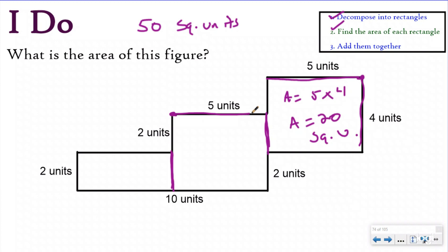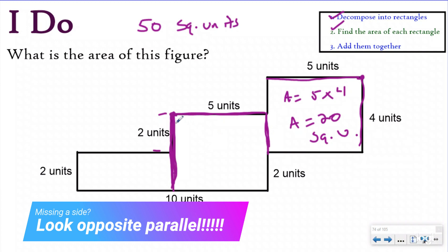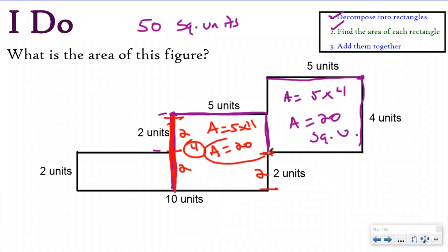For the second rectangle, one dimension is five, but we don't have the second dimension shown. We can't just say it's two — two only goes from this point to this point; we need the entire width. Here's a key idea: if you're missing a side, look opposite and parallel. Because opposite sides of rectangles are congruent, looking opposite parallel tells us this side is also two, giving a total length of four. So area equals five times four, which is again 20 square units. Looking opposite parallel is a key concept you may need to use.